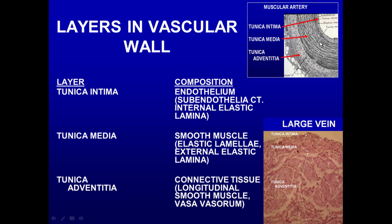The media is a smooth muscle layer, which can also contain elastic fibers and an external elastic lamina. The outside layer is the tunica adventitia, which is connective tissue. However, in large hanging veins you may actually have smooth muscle disposed longitudinally in the adventitia, as opposed to circular muscle which we see in arteries.